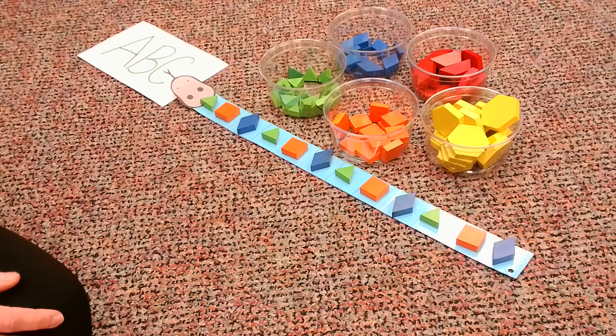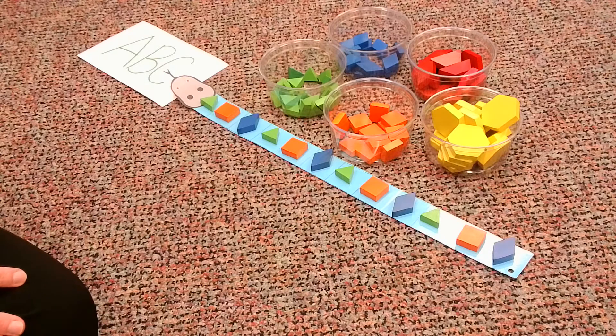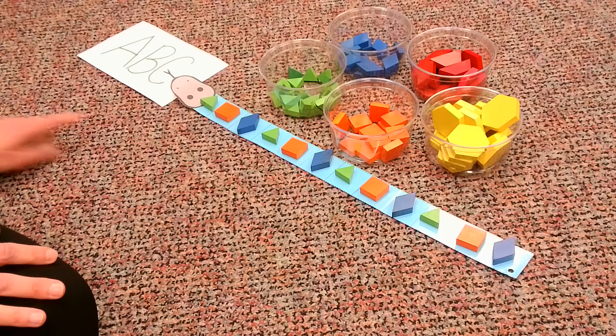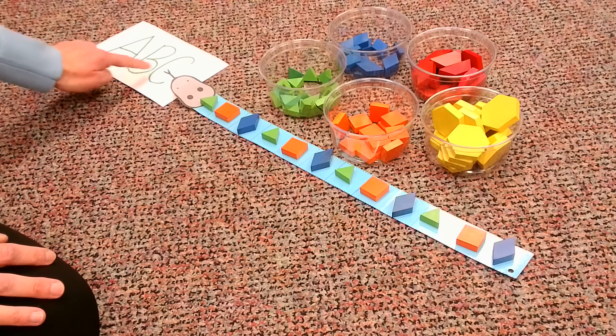How about that? I really like that snake. He's pretty cool. A lot of different colors there. So we have our A, B, C pattern. Three different shapes. One shape per letter.